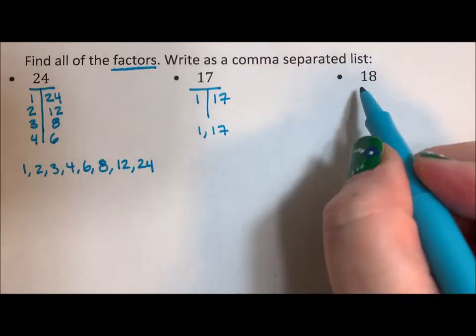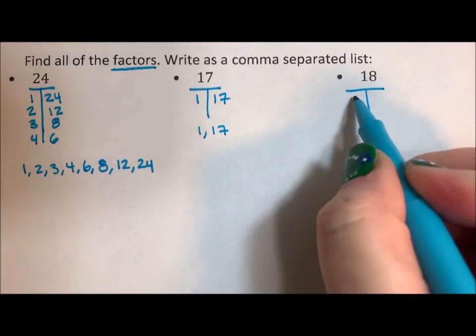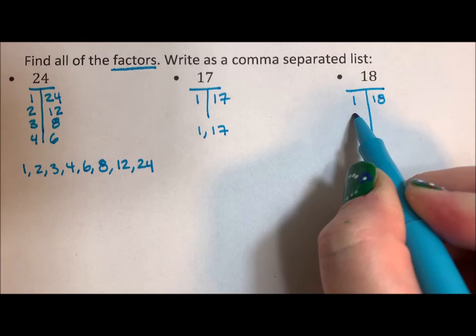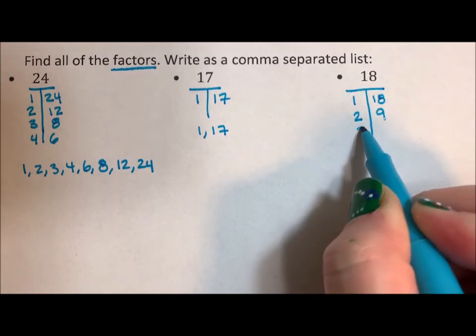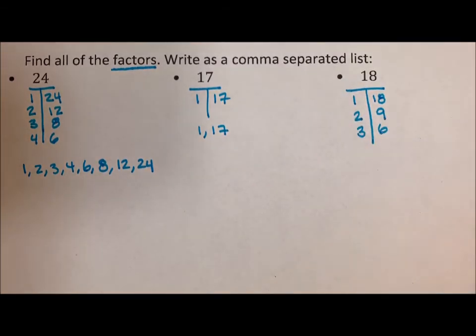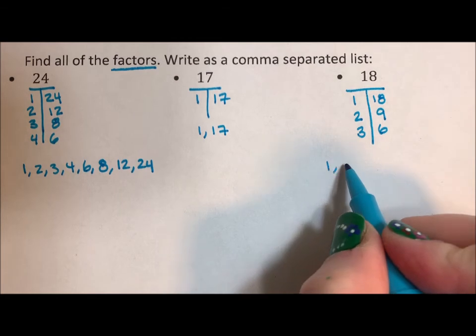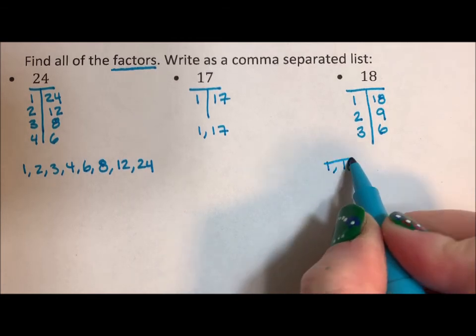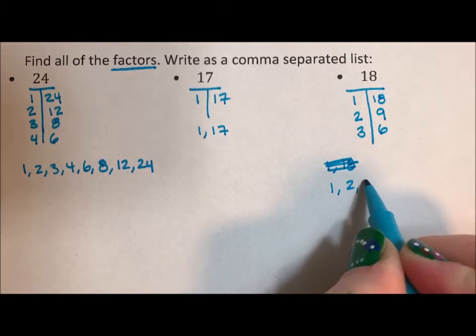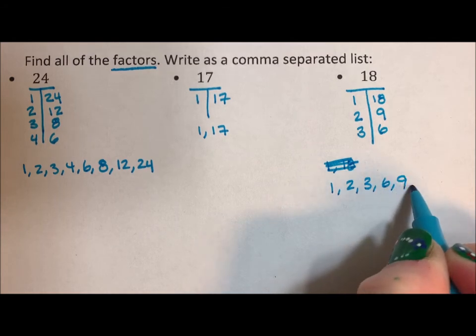My factors of 18. 1 times 18, 2 times 9, 3 times 6. So I have 1, 2, 3, 6, 9, 18.